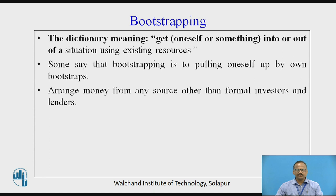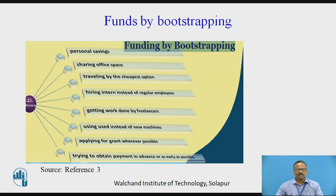Bootstrapping strategies also include: instead of purchasing a new machine, purchase an older one; minimize personal expenses; avoid unnecessary expenses; try to obtain payment in advance or as early as possible; and apply for grants whenever possible. Funds by bootstrapping include personal savings, use of a credit card, sharing office space — the best example being Dhirubhai Ambani, who shared office and telephone during his initial days — hiring interns instead of regular employees, getting work done by freelancers, using used machines instead of new ones, and applying for grants whenever possible.